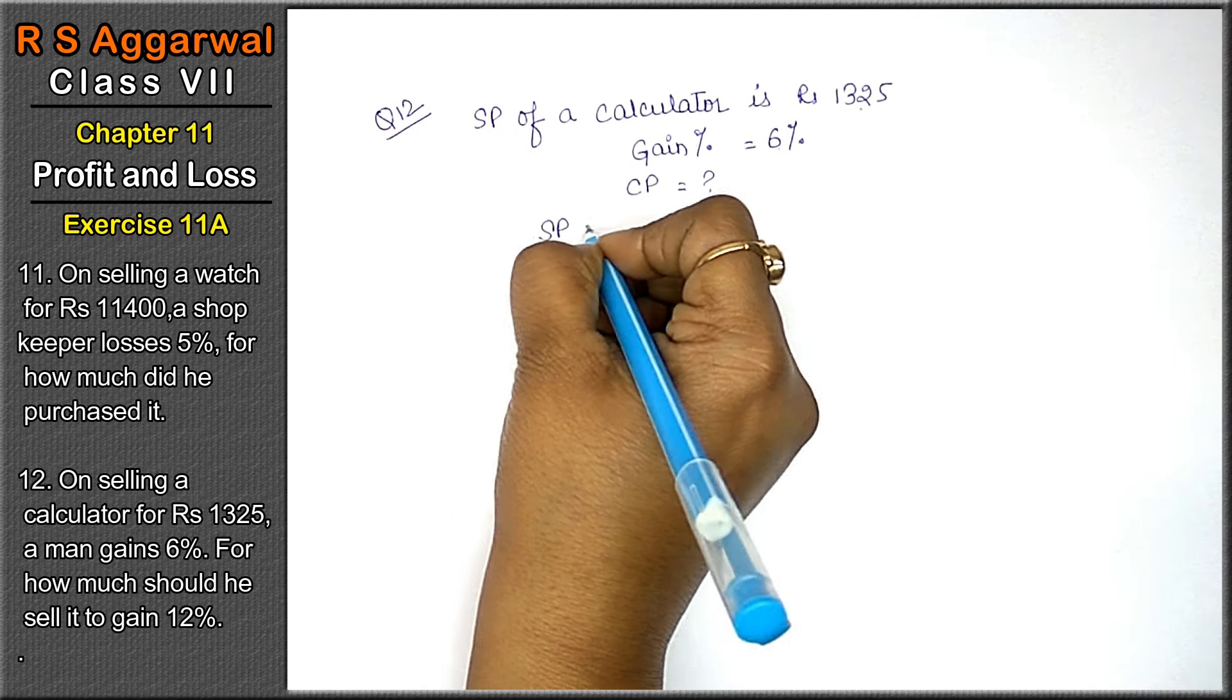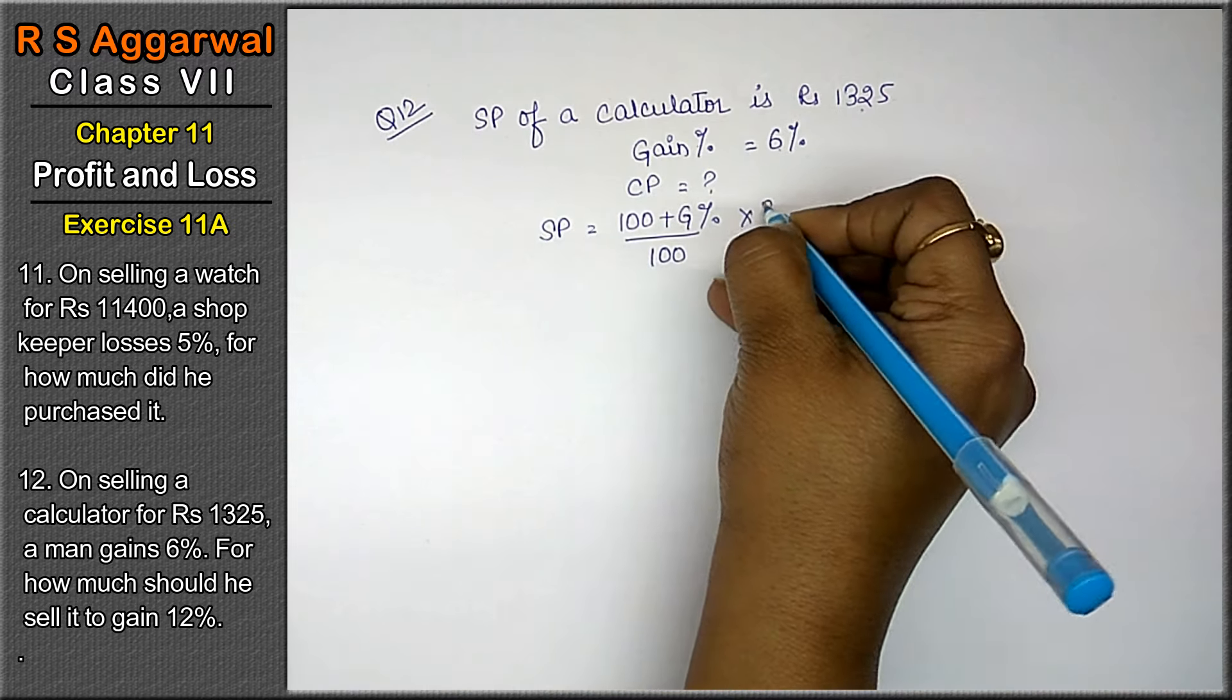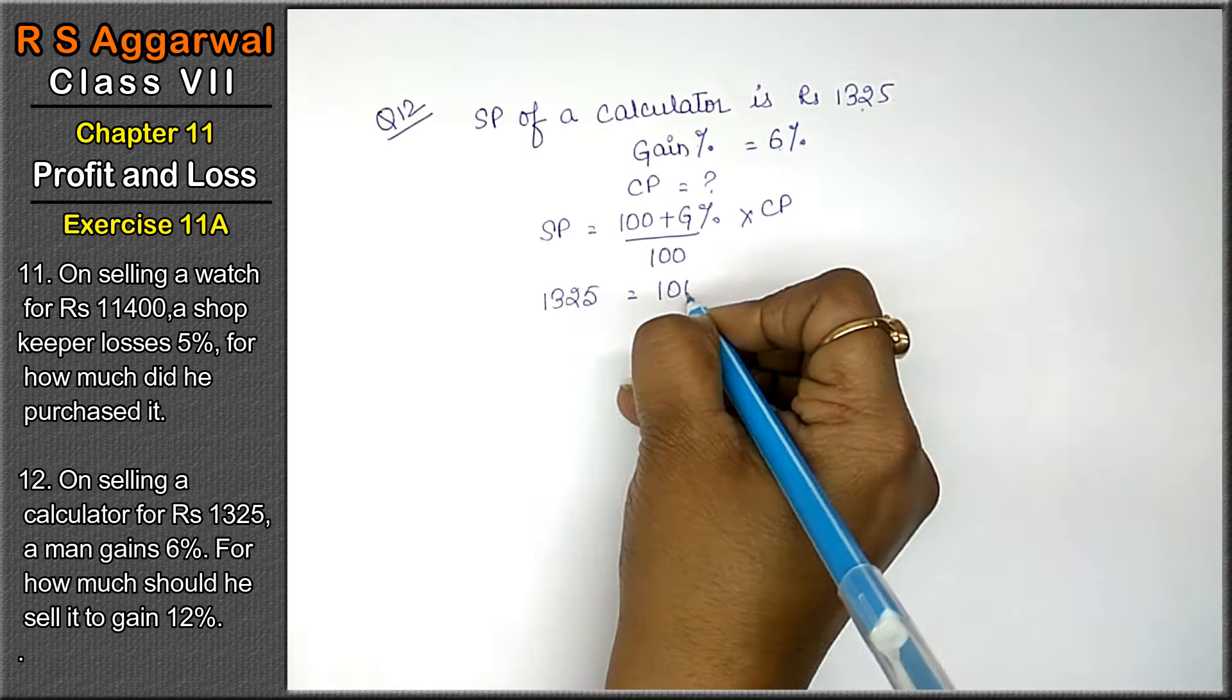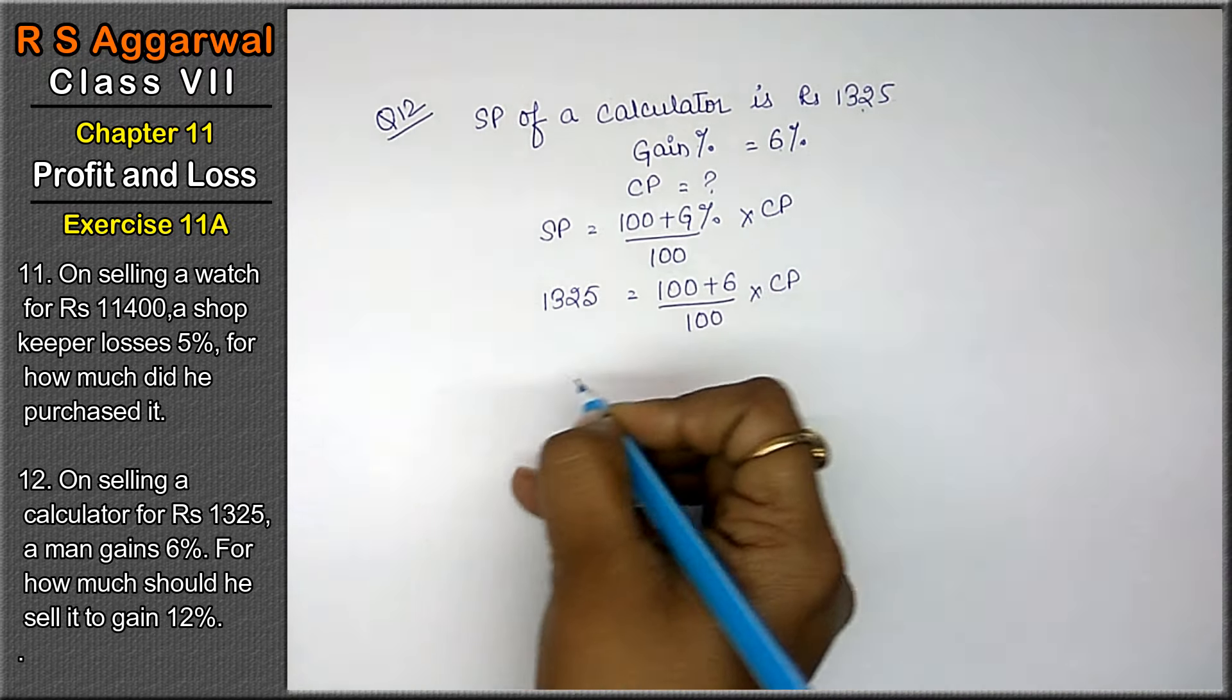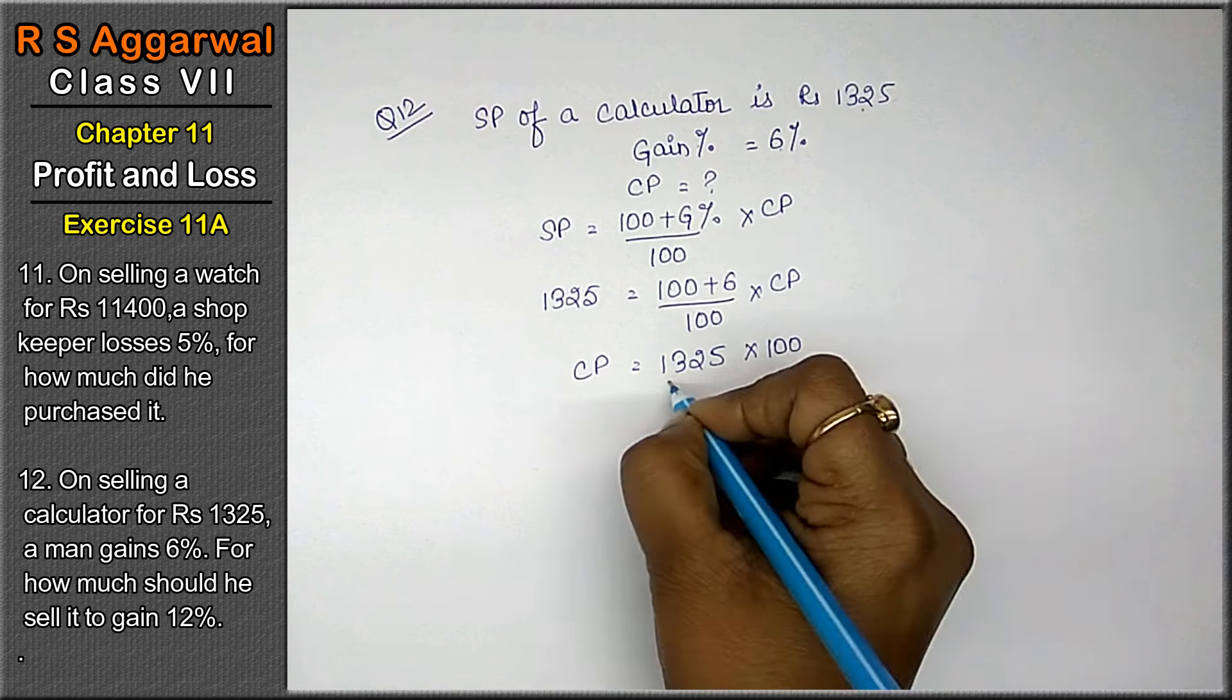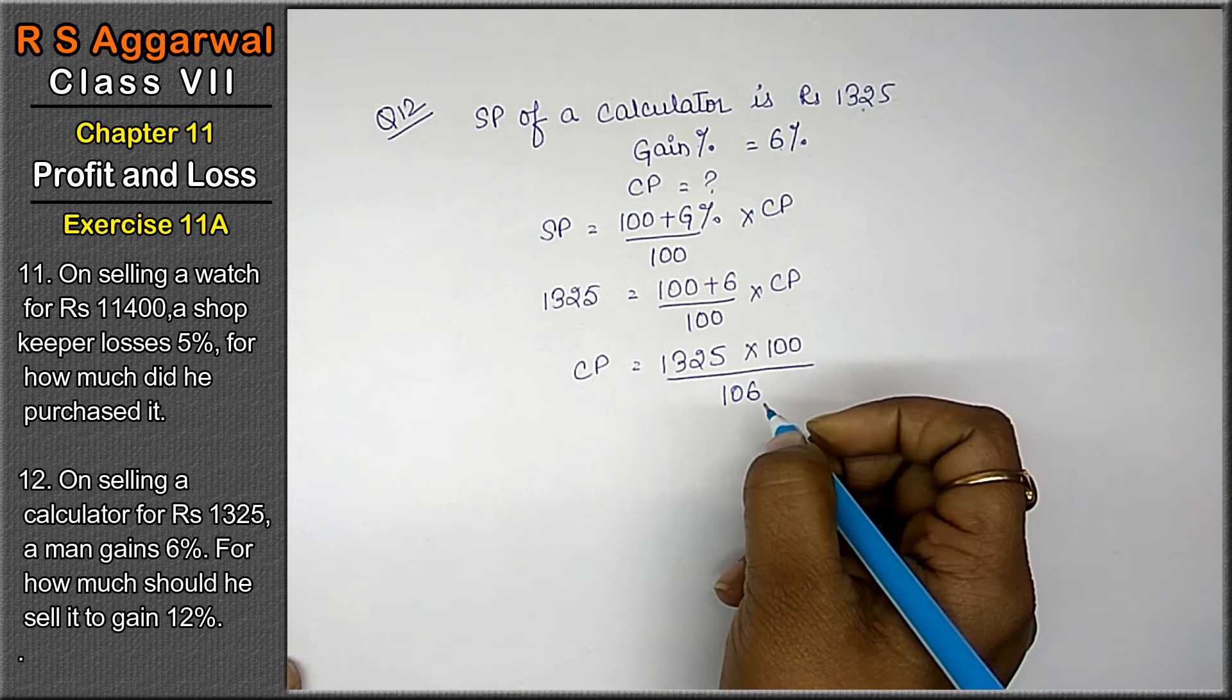SP is 1,325 = (100 + 6) upon 100 into CP. Keep CP as it is. 1,325 as it is. 100 in the denominator becomes multiply, and 106 with CP in numerator becomes divide on the other side.